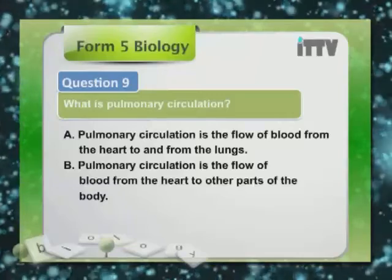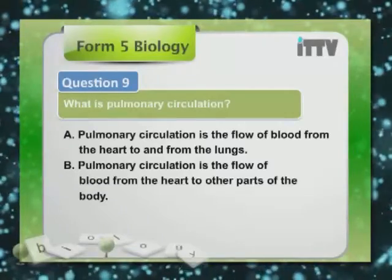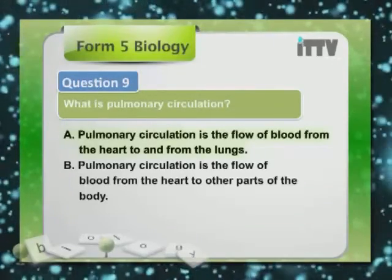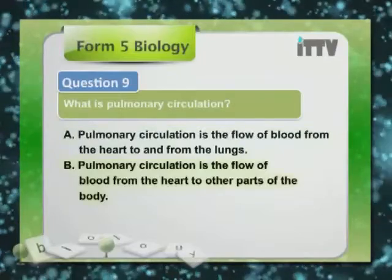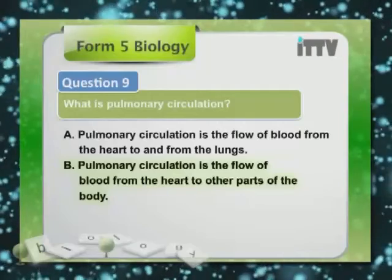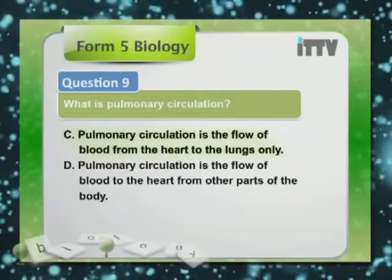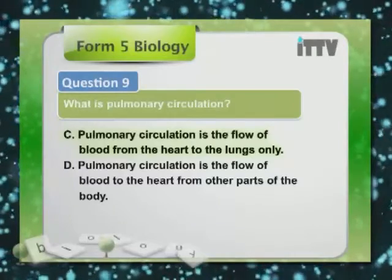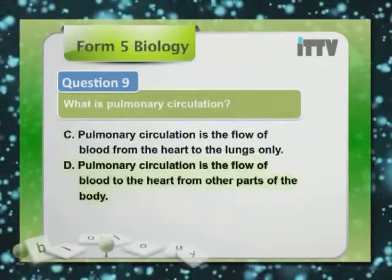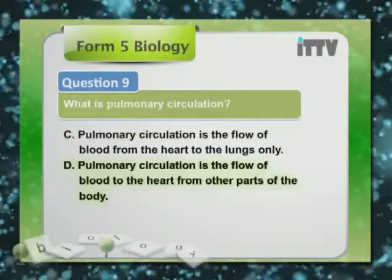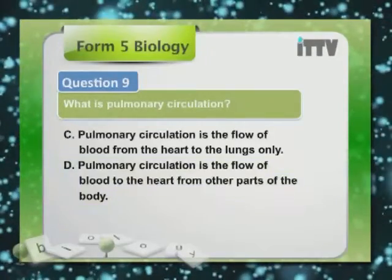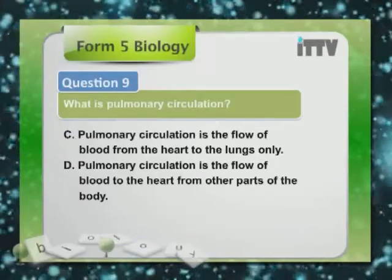Question 9: What is the pulmonary circulation? A. The flow of blood from the heart to and from the lungs. B. The flow of blood from the lungs only. C. The flow of blood to the heart from other parts of the body.